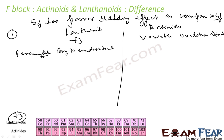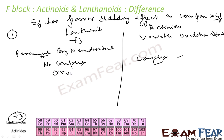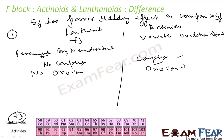Paramagnetism is easy to understand in lanthanides but it is complex in actinides. Lanthanides don't form any complex — no complex formation — but actinides do form complexes. In lanthanides there are no oxo ions, but actinides have oxo ions. Lanthanides, except promethium, are all non-radioactive, but actinides are radioactive.